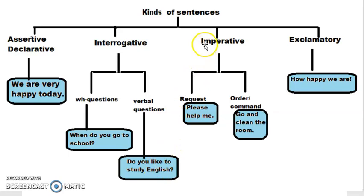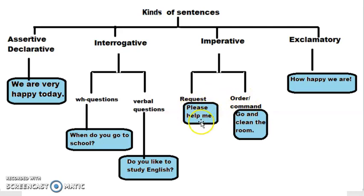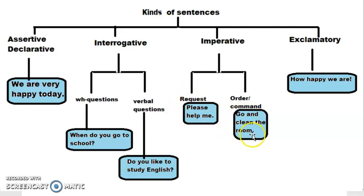Third kind of sentence — imperative sentence. Again there are two subclasses: request and order. Order is also called command. 'Please help me.' — this is a request. 'Go and clean the room.' — this is an order or command. So in imperative sentences there are two subclasses: requests and orders.